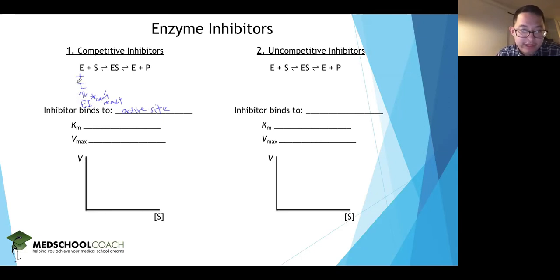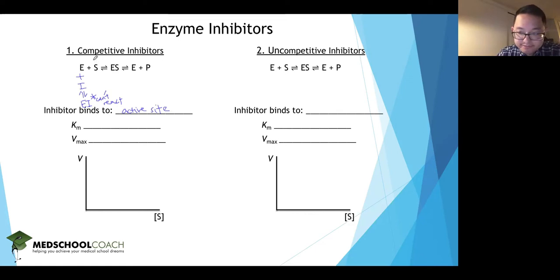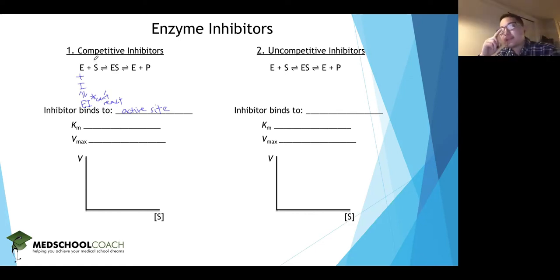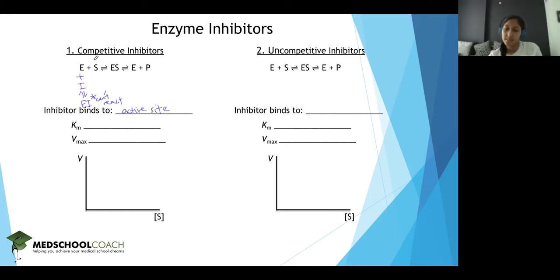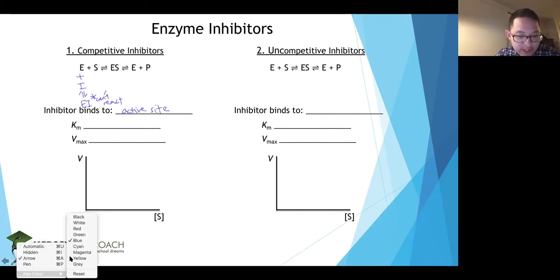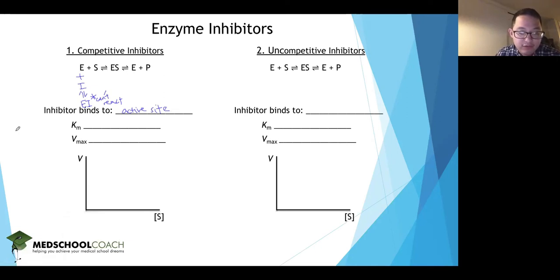When you add the inhibitor to the solution, it becomes harder for the enzyme to bind to the substrate. So the enzyme now has a lower affinity for the substrate. One important relationship to keep in mind for the MCAT is that KM is inversely related to the affinity of the enzyme for the substrate.